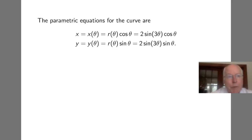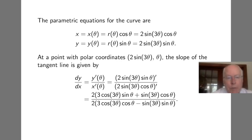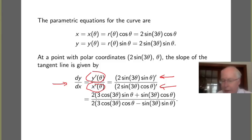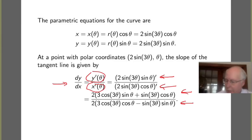So let's convert to parametric equations and use our parametric methods for finding the slopes of the tangents. The x coordinate is given by R cos theta, and remember R in this case is 2 sine of 3 theta, so x is expressed as 2 sine 3 theta cos theta, and y is given by 2 sine 3 theta sine theta. The slope of the tangent line dy/dx is given by dy/dθ divided by dx/dθ. We've computed those derivatives using the product rule and the chain rule — you might run through and verify these calculations.